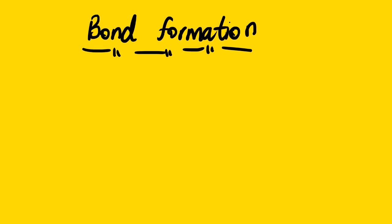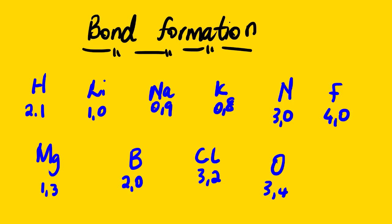Before we dwell much on the different types of bonds, we should know the term electronegativity, because this lesson is mainly based on electronegativity. Electronegativity is the tendency of an atom to attract a pair of bonding electrons to itself in a molecule. We have elements with different electronegativity values. The most important elements to take note of are hydrogen, lithium, sodium, potassium, magnesium, boron, chlorine, nitrogen, oxygen, and fluorine — these are the most used elements in compounds.